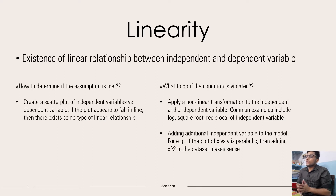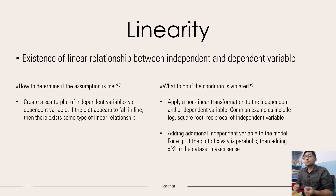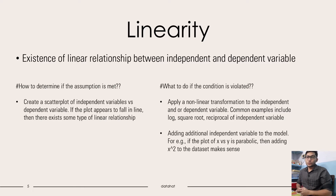Additionally, we can add another independent variable to the model. For example, if the plot of x versus y is parabolic, then it would make sense to include x-squared as one of our independent variables. This is the kind of feature engineering we can do.